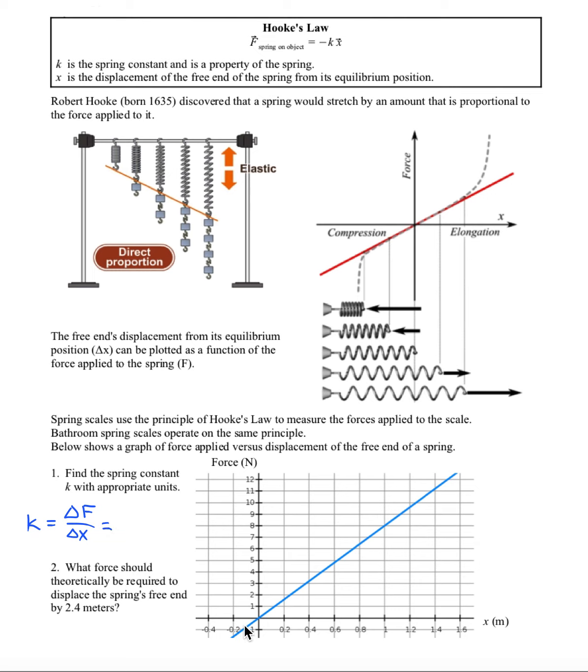So all I have to do is pick two points on the graph with which to calculate a slope. When the spring hasn't been stretched at all, it's in its equilibrium position, which is the natural position that it likes to be in. That occurs at zero, zero, here. However, if the spring is stretched by one meter, the graph shows that it requires eight newtons of force to achieve that amount of stretching.